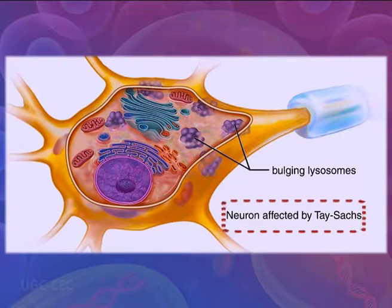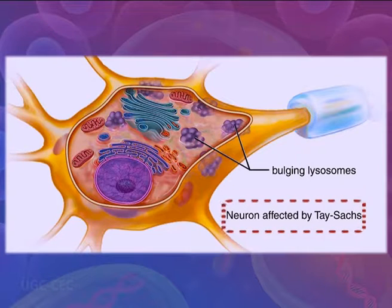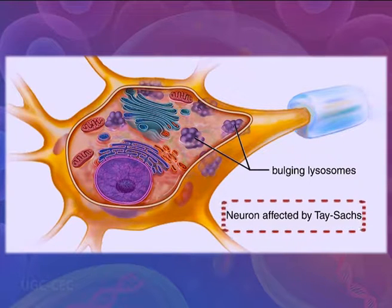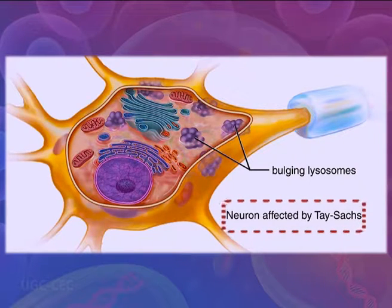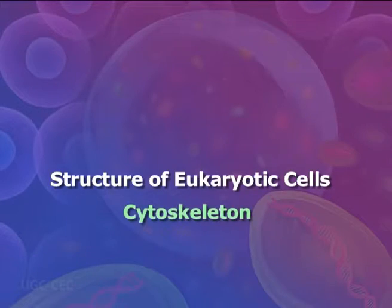In one such disease, cells surrounding nerve cells cannot break down a particular lipid, and the nervous system is affected.